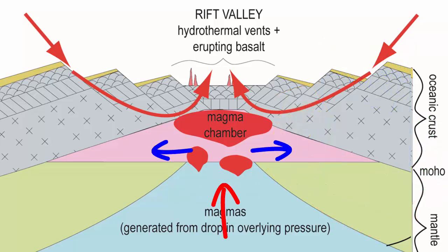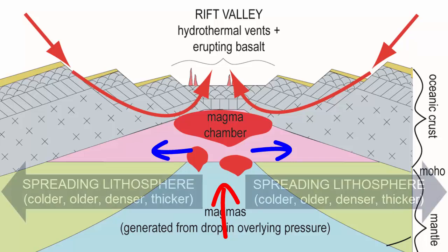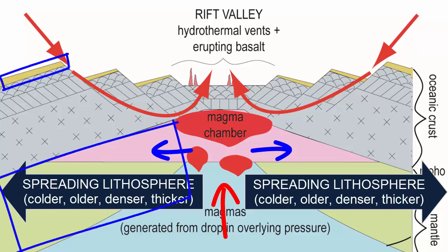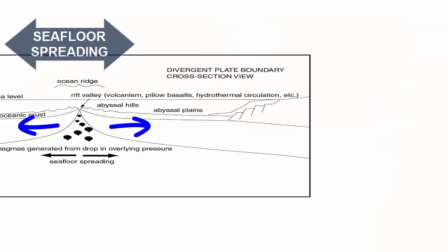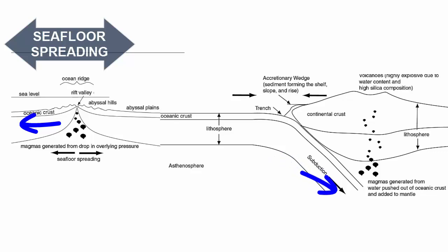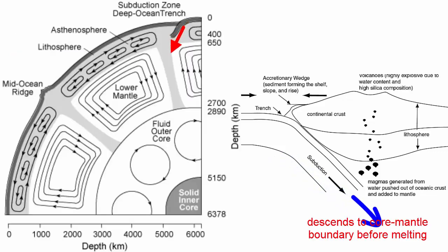What happens to this ocean lithosphere as it spreads? Not much. It grows gradually colder, older, and denser, and collects a thicker sequence of sediment atop and a thicker section of mantle plating underneath it — thus thicker lithosphere — until eventually it is so dense that it becomes denser than the rock underneath it. It detaches and sinks back into the mantle, possibly subducting as deep as the core-mantle boundary before finally melting and becoming reabsorbed back into the mantle.